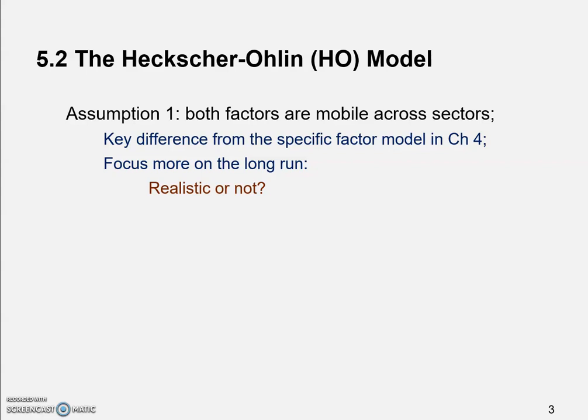From your intermediate microeconomics class, recall how we define long run versus short run. In intermediate microeconomics, if there is at least one factor of production that is fixed, then it's the short run. If all factors of production are variable — in other words, you can adjust the quantities — then it's the long run. Similarly here, if at least one factor of production is specific, it's more about the short run. If all factors are mobile, then it's more about the long run.